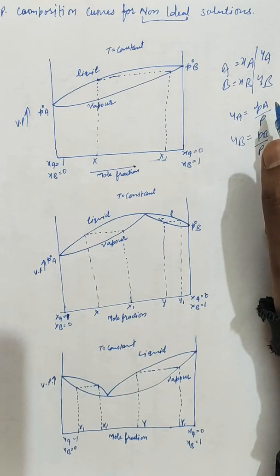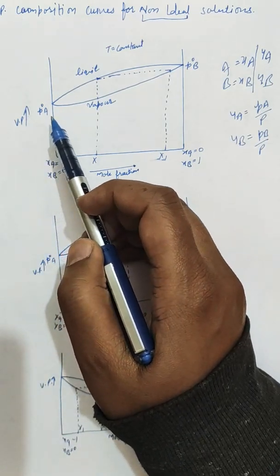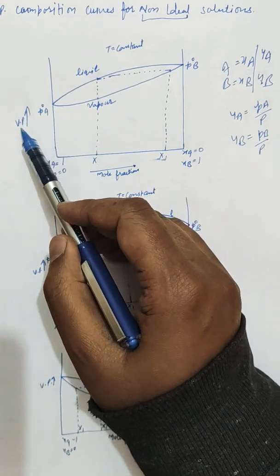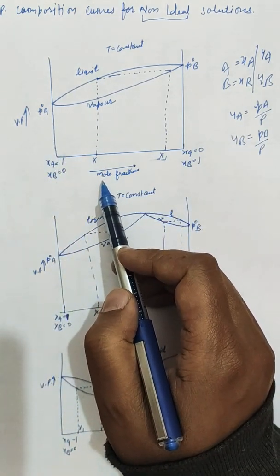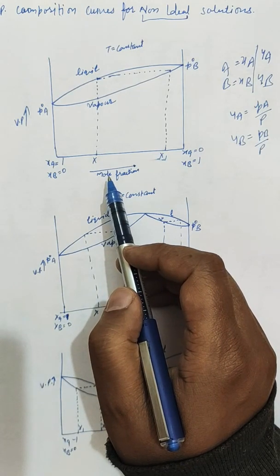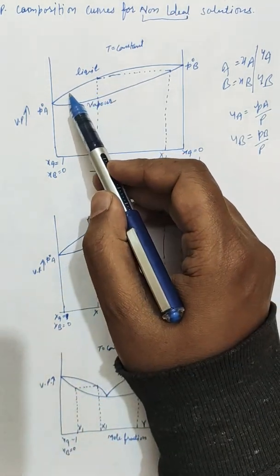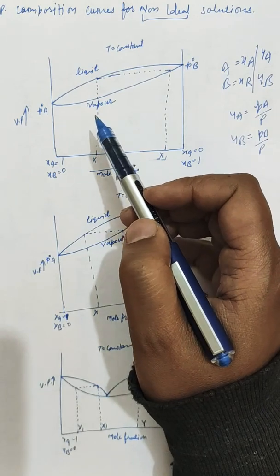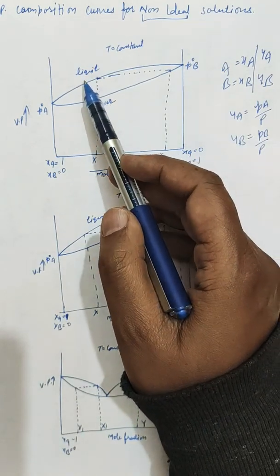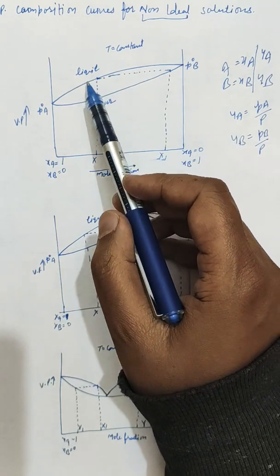Vapor pressure composition graphs at a particular temperature are obtained by measuring the vapor pressure and the composition of the vapor phase for a particular composition of the liquid mixture. In each diagram there are two curves: one for the liquid state and one for the vapor state.